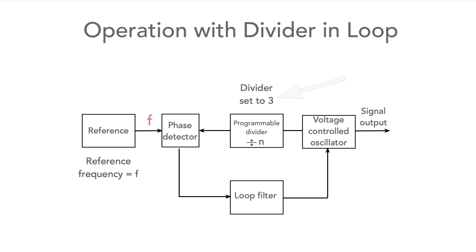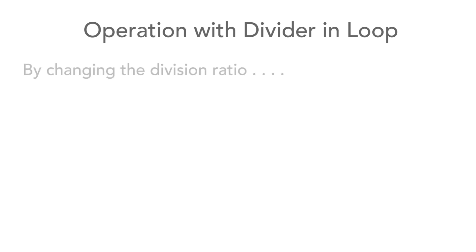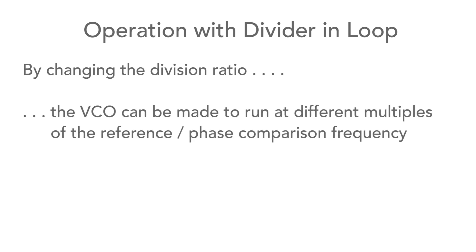Now let's see what happens if the divider has a division ratio of 3. Again, the loop will effectively aim to make the frequency at the two inputs to the phase detector the same. For this to be true, the VCO must be operating at three times the phase comparison frequency. So we can see that by changing the division ratio, the VCO can be made to run at different multiples of the phase comparison frequency.